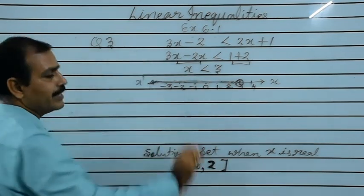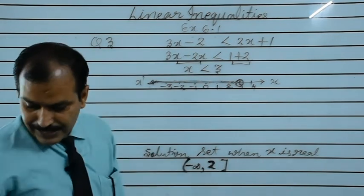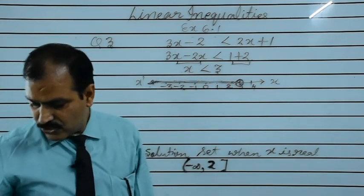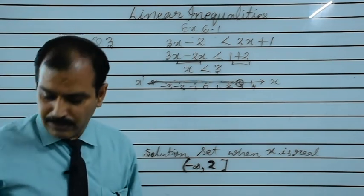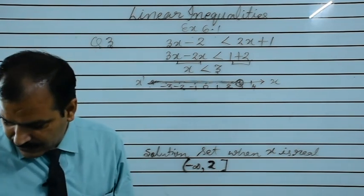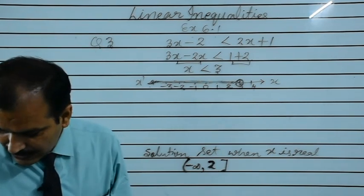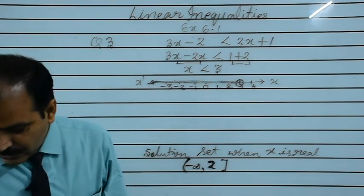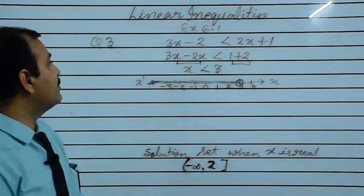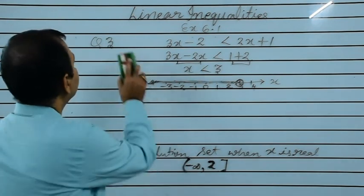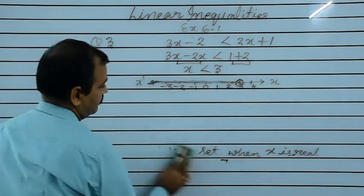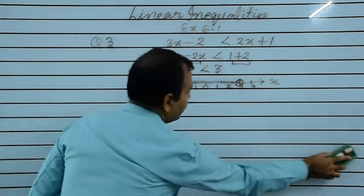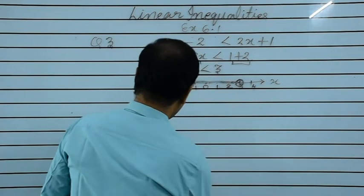After question number 17, the next question is the word problem, question number 21 from the book.